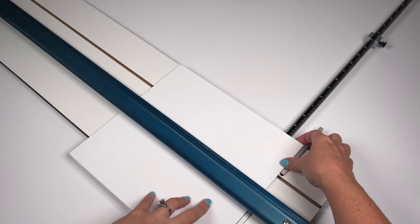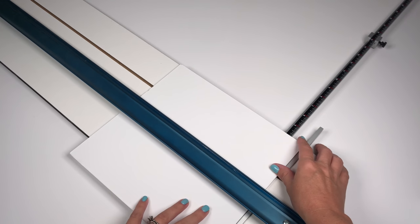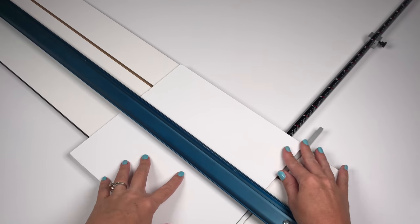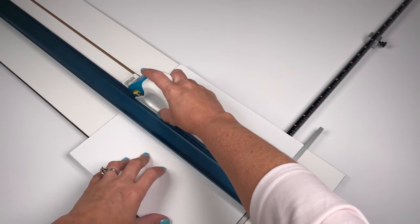You'll need two sides, a back, a front door, a top and a bottom, and you can also add a shelf or two inside the locker.